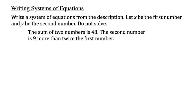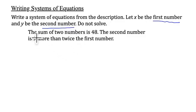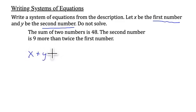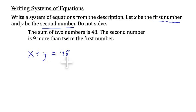Before we start solving systems of equations with substitution, let's practice writing a system. We are going to let x be the first number and y be the second number, and we are not going to solve this one. The sum of two numbers is 48. An equation for that would be the first number plus the second number equals 48. The key word here is 'sum,' because that means we add the two numbers, so x plus y equals 48.